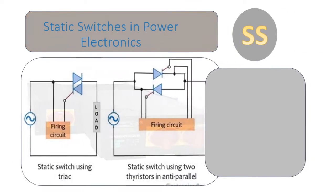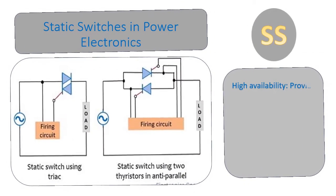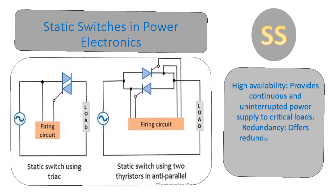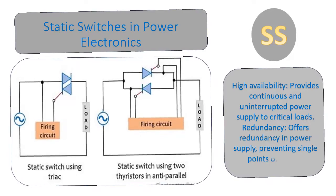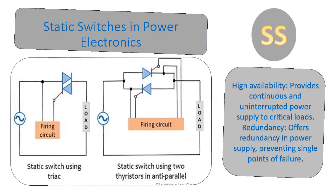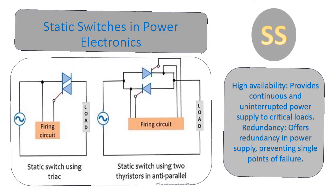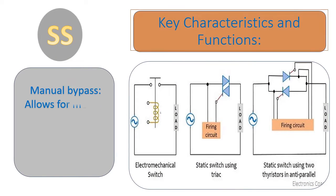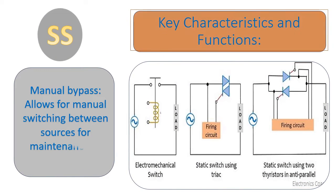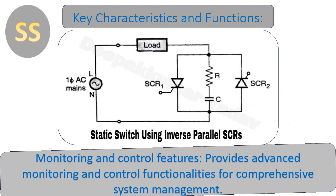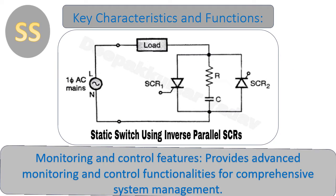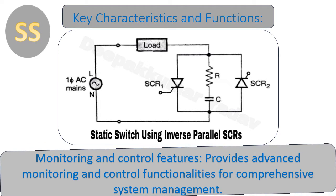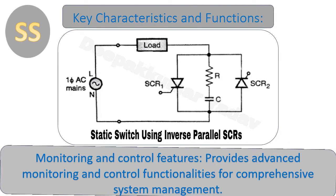High Availability: provides continuous and uninterrupted power supply to critical loads. Redundancy: offers redundancy in power supply, preventing single points of failure. Manual Bypass: allows for manual switching between sources for maintenance or testing purposes.